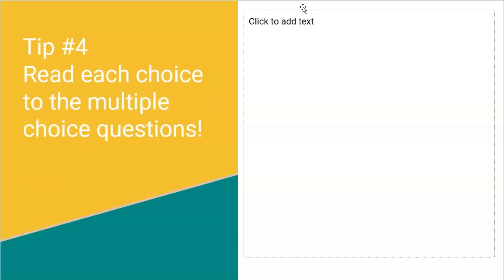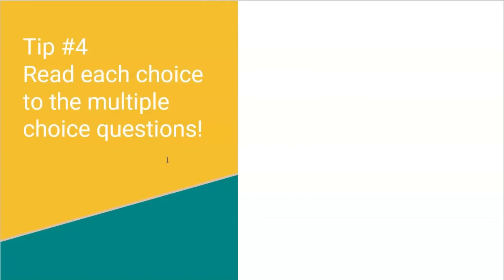Tip number four: read each choice for the multiple choice questions. A lot of times students will read one choice and think, that's exactly what I was thinking — but maybe choice E is actually a little bit better. When there's a lot of reading, it could come down to one word — like sample mean versus population mean — which completely changes your choice. So take your time, read, circle and underline keywords. Don't stop at the first choice you like just because it sounds right.